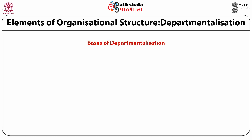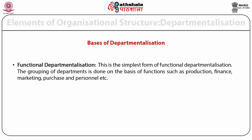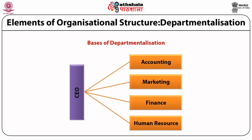The first basis is functional departmentalization — the simplest form of departmentalization. Here, the grouping of departments is done on the basis of functions such as production, finance, marketing, purchase and personnel. This is depicted in a diagram showing the CEO at the top with various tasks and products combined on the basis of various functions.